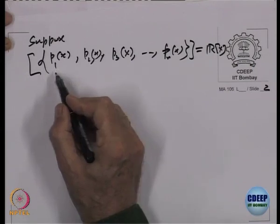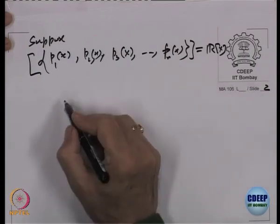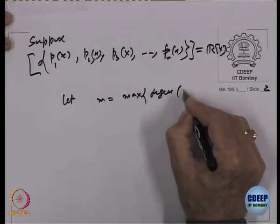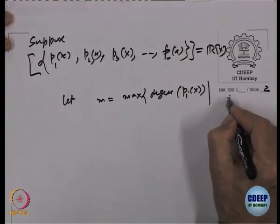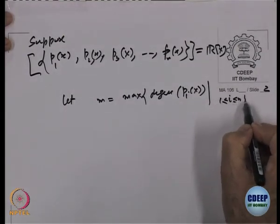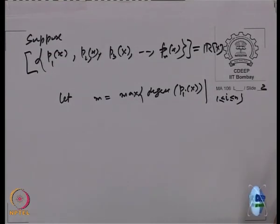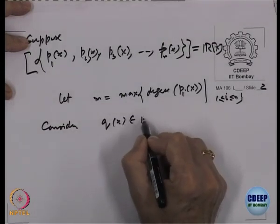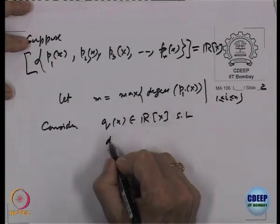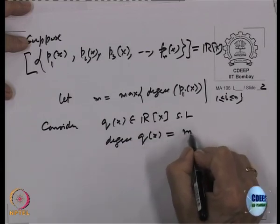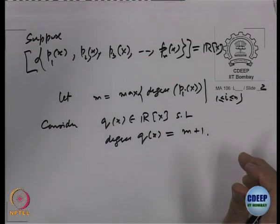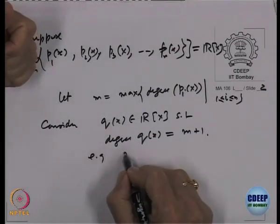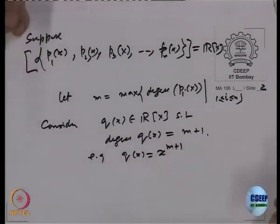P1 has a degree, P2 has a degree, ..., Pn has a degree. Let M be the maximum of the degrees of Pi(x) for i = 1 to n. Since we have a finite number on the right, this maximum M will exist. Now consider Q(x), a polynomial of degree M+1 — for example, Q(x) = x^(M+1).